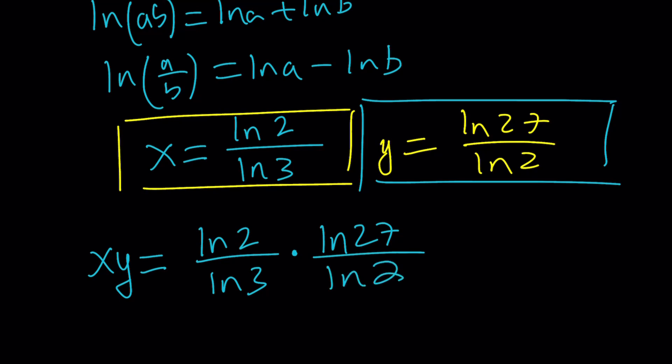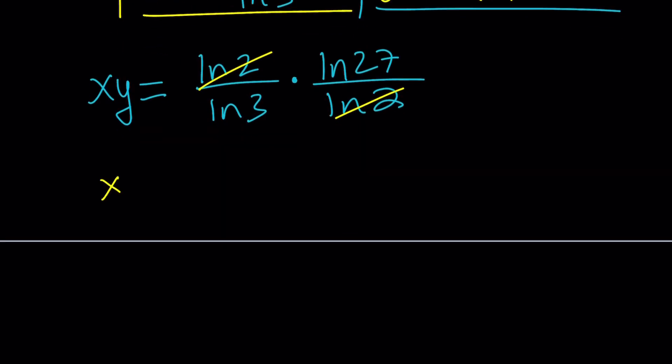Now ln 2 cancels out because it's not 0. And we end up with XY equals ln 27 over ln 3. Do you leave it like that? No. Because there's actually a way to simplify this expression. Now there's a couple ways to go about it. Let me go ahead and show you both.